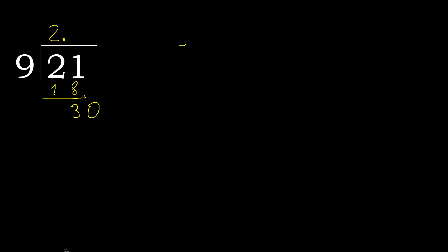9 multiplied by 4 is greater. 9 multiplied by 3 is 27 — 27 is not greater. Subtract, complete.